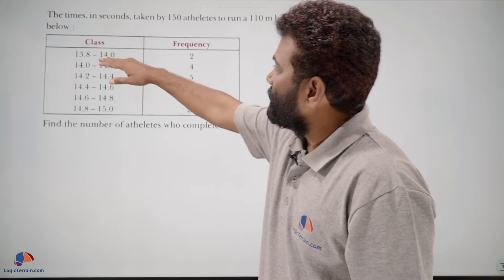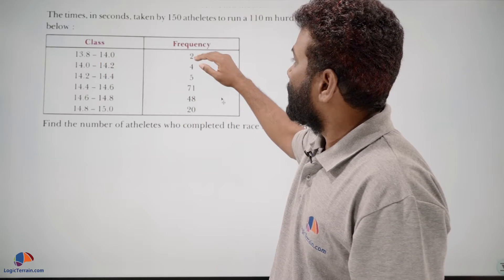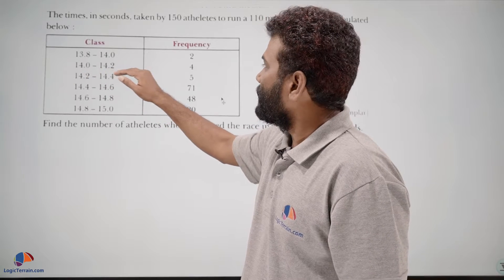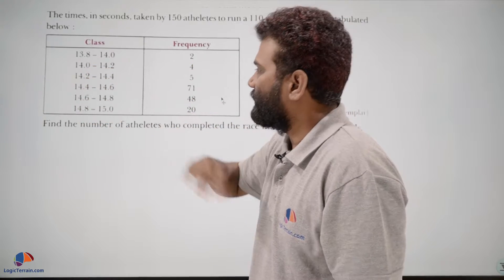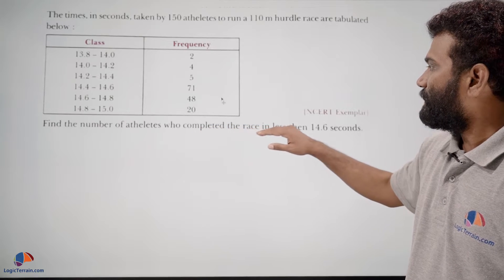Time in seconds 13.8 to 14.0, there are 2 athletes who completed it, 14.0 to 14.2, 4 athletes, and so on like that. Then find the number of athletes who completed the race in less than 14.6 seconds.